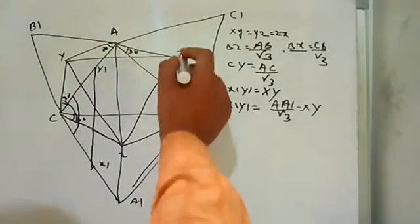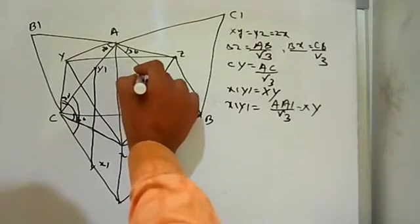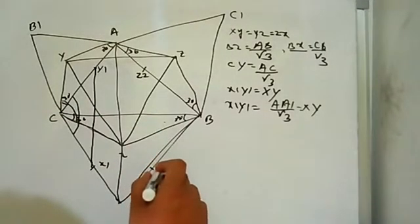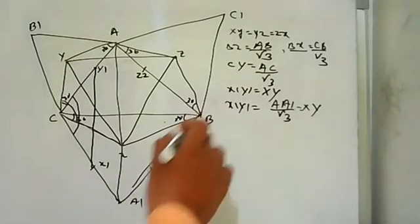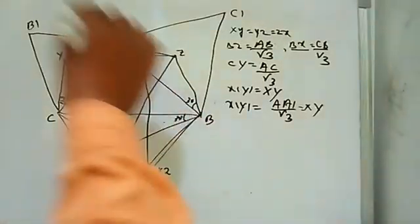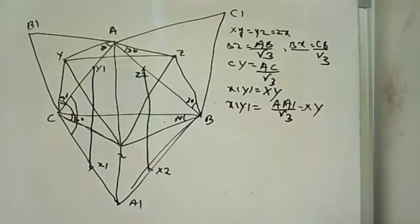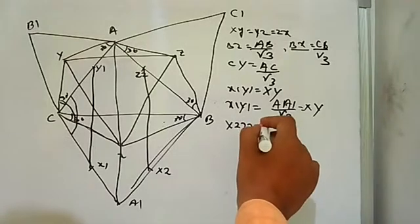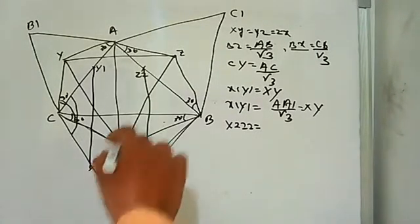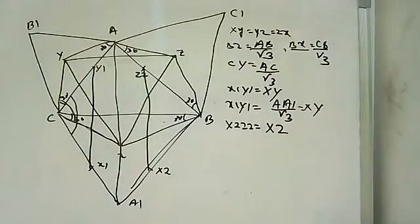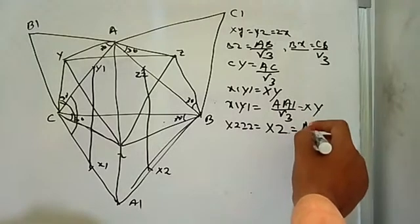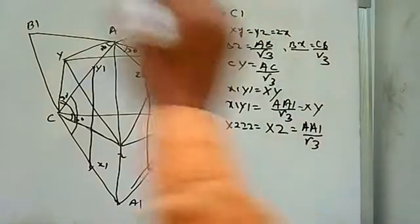Now, on the right side, take a point Z2 such that BZ2 is equal to BZ. Again, join Z2 and X2. By the same process, X2Z2 would be equal to XZ. And this is also equal to AA1 divided by root 3.